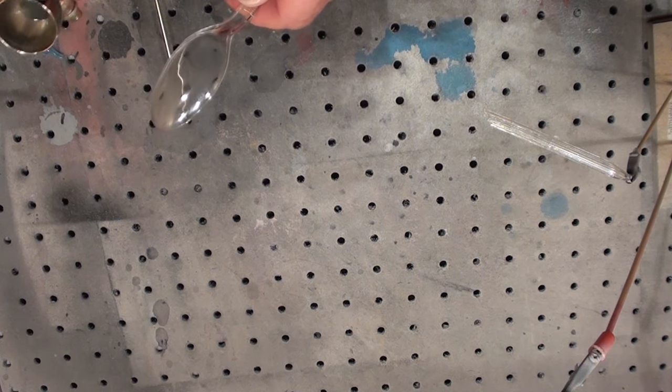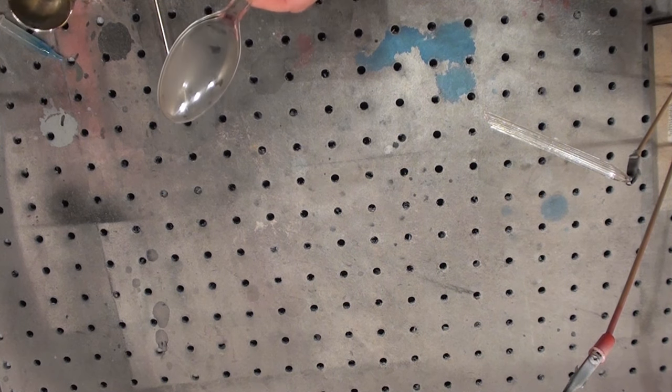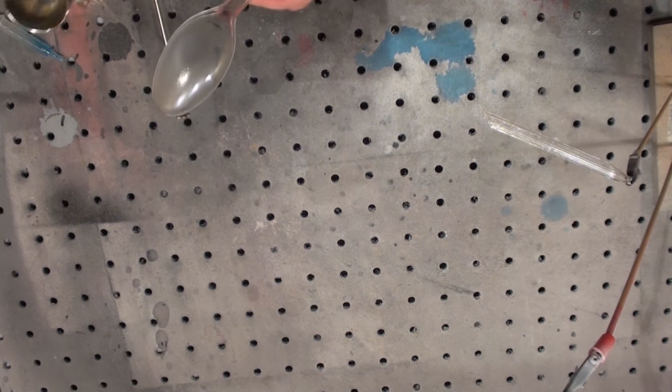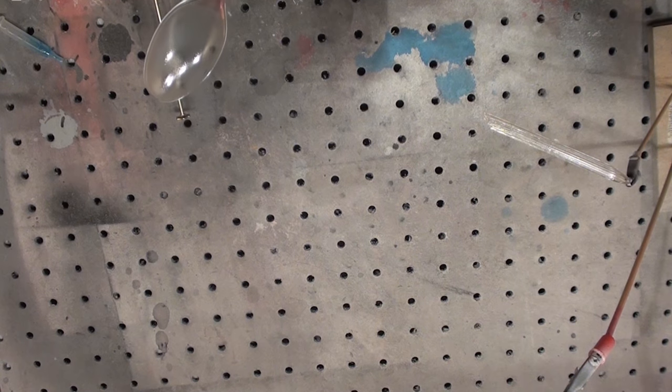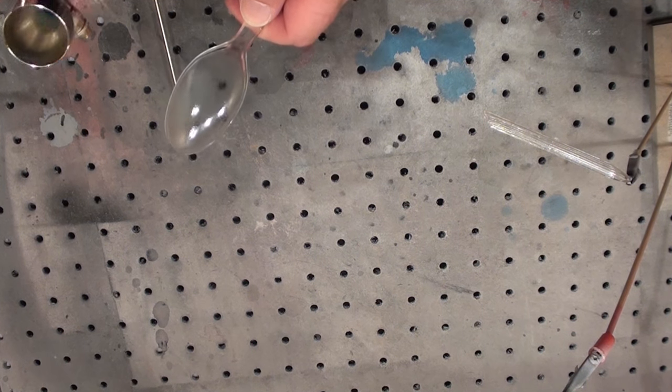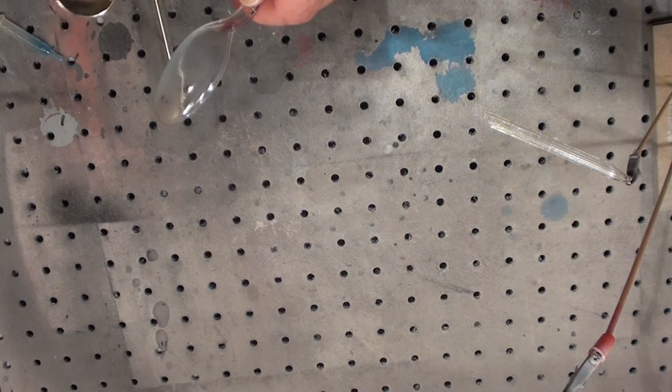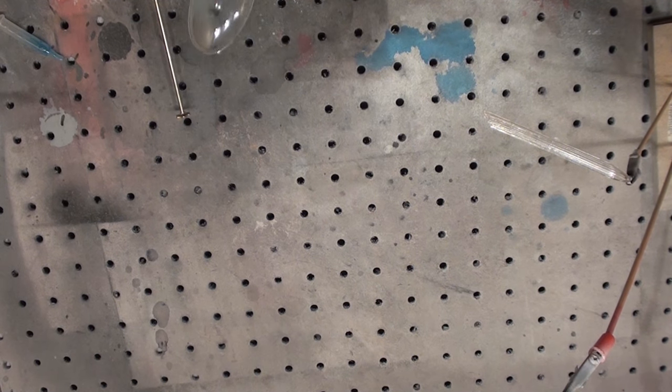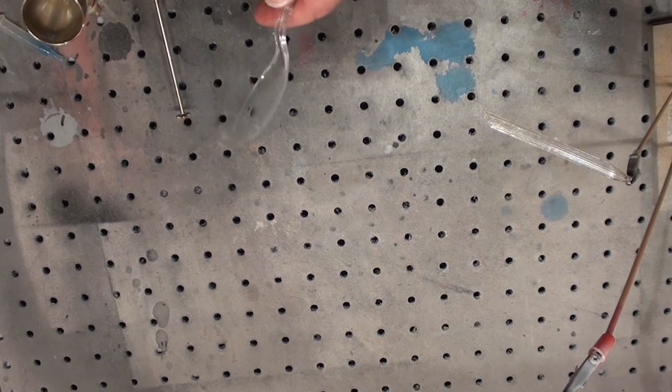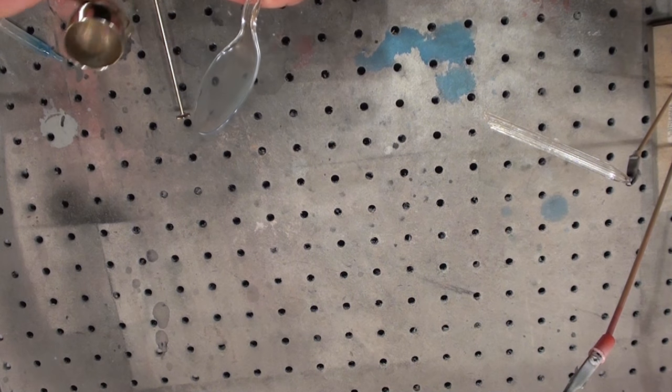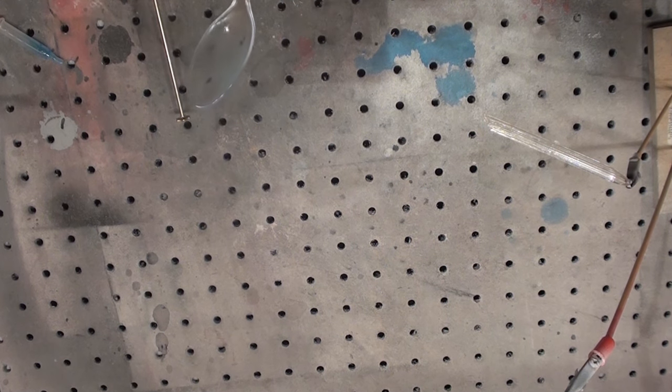So, spraying a little bit of this on there and I probably have the paint way too thin. You can start seeing a little bit of a blue tint to it right there. Or I didn't mix the paint in the airbrush well enough.